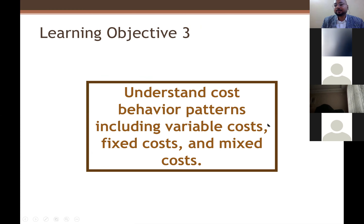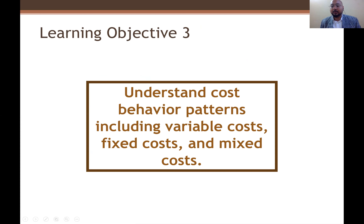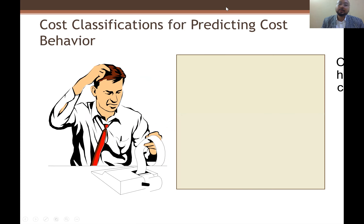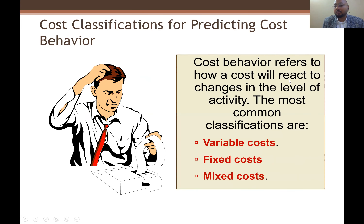Our third learning objective is to understand cost behavior patterns, including variable cost, fixed cost, and mixed cost. We are now classifying costs based on the behavior of the cost. Before, we studied cost based on manufacturing versus period or product. Now, cost based on behavior: on the basis of behavior we have fixed cost, variable cost, and mixed cost.